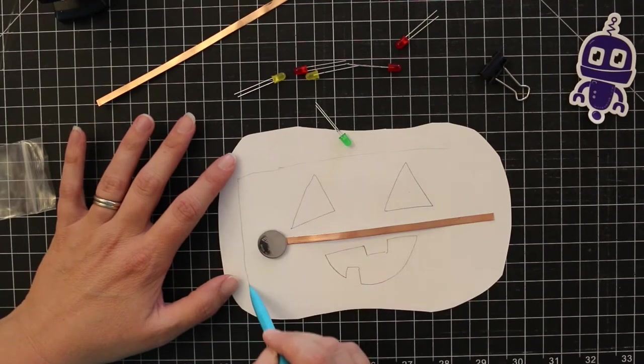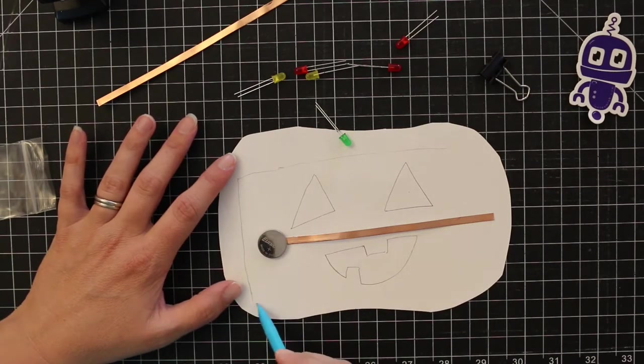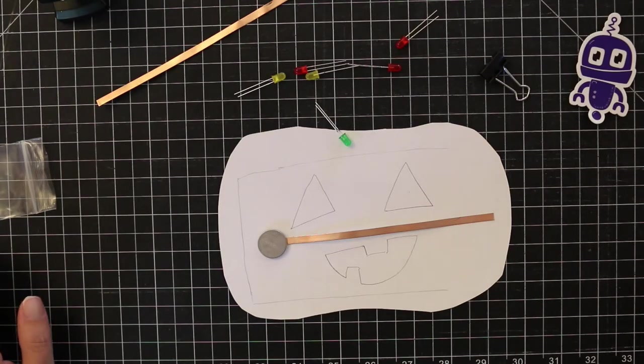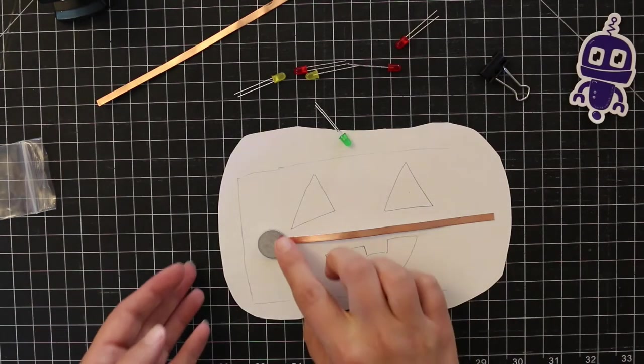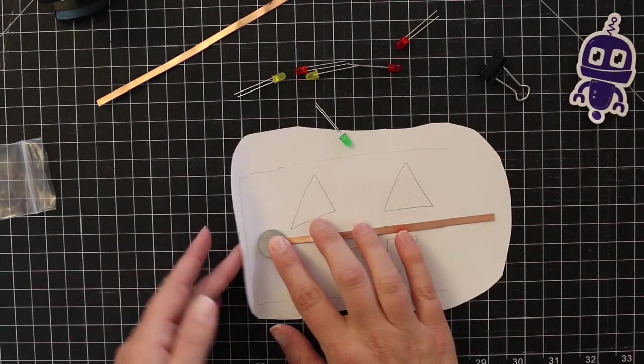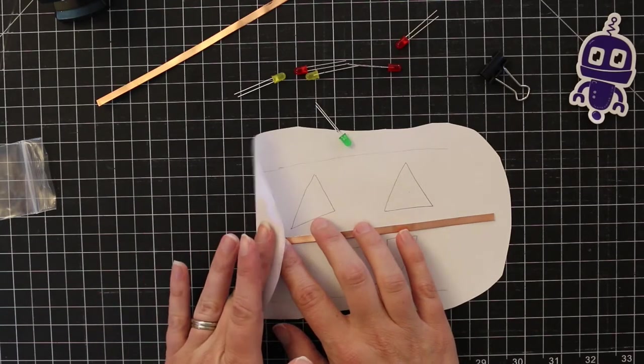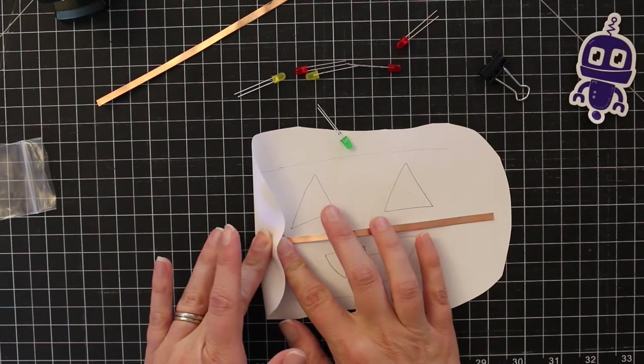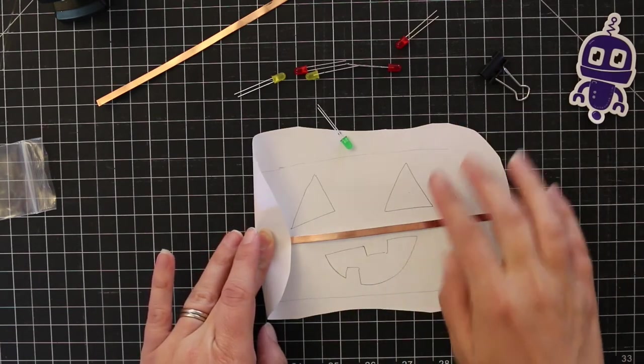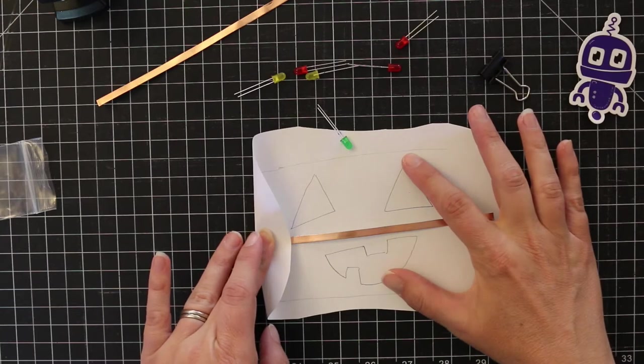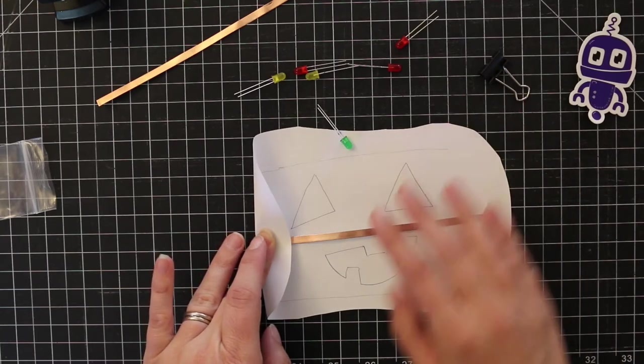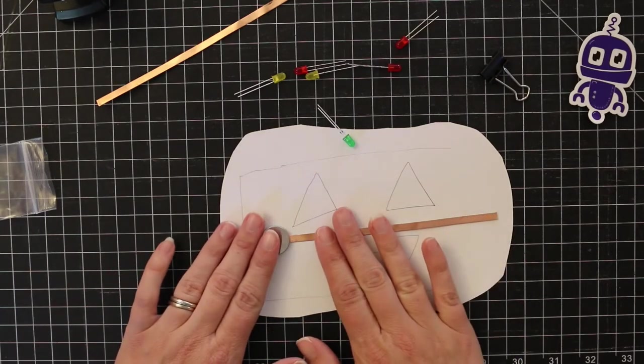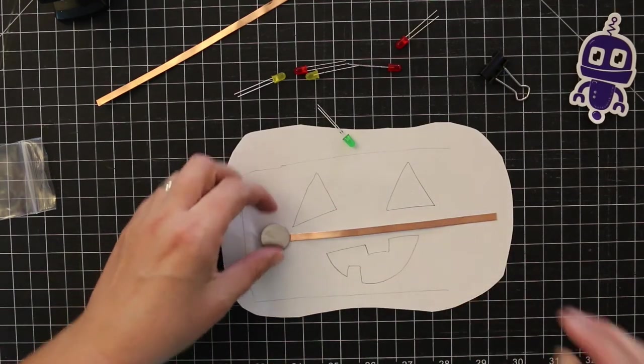We're going to run another piece of copper tape on the outside of our pumpkin. And we're going to, in order to turn our pumpkin on and off, fold our side up so that it touches the battery and completes a circuit. Now it's not completing a circuit right now because we don't have our LEDs in place, but once we get our LEDs in place we'll complete our circuit. So let's get started.